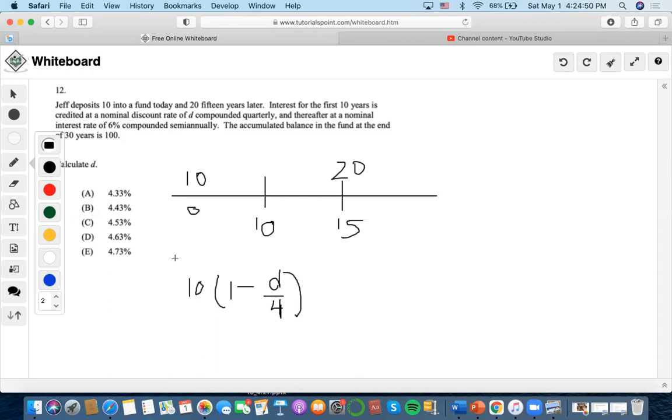If we were finding present value, we would make the exponent positive. Since it's occurring within 10 years and compounding quarterly, the exponent on this rate is negative 40.